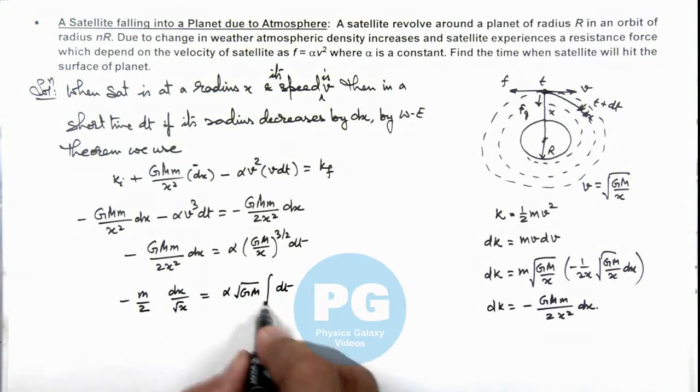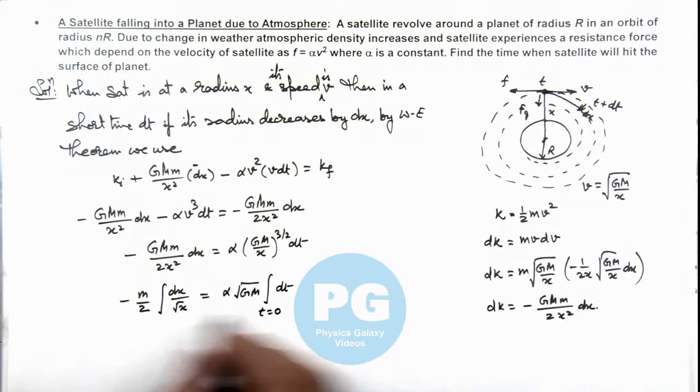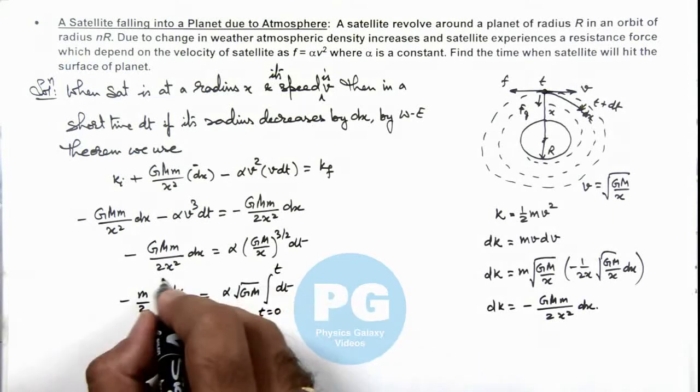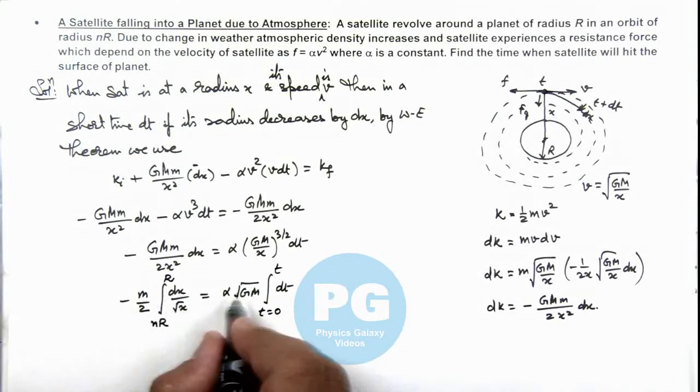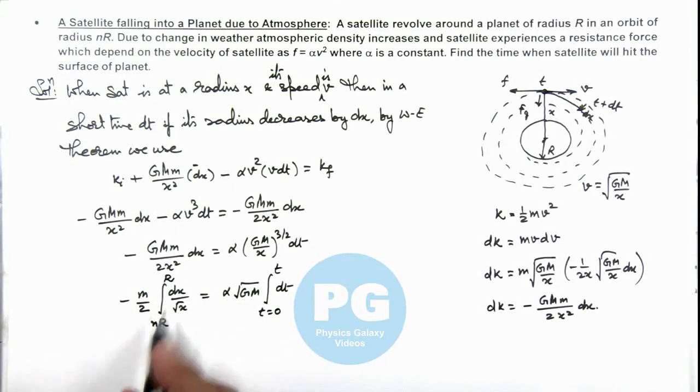And here we can integrate these terms: at t equal to zero the value of x was nR, and after time t say it reaches to R, the surface of planet.